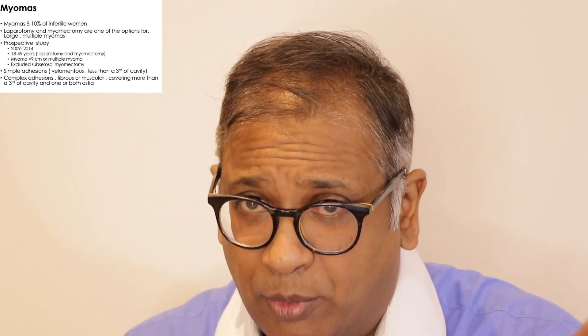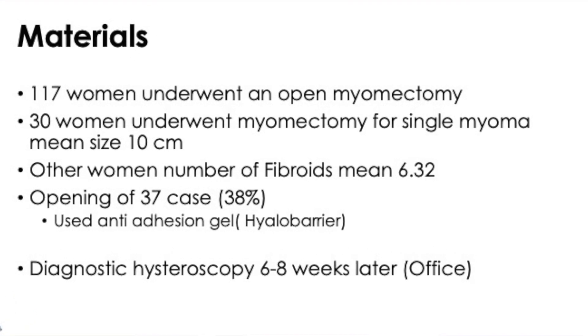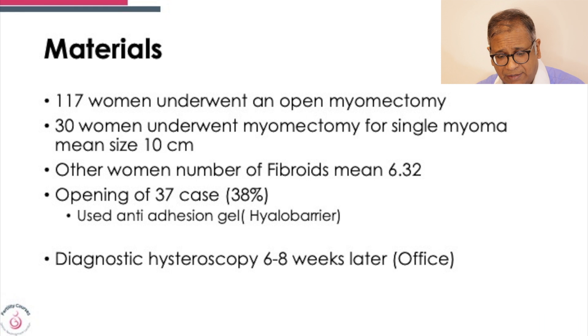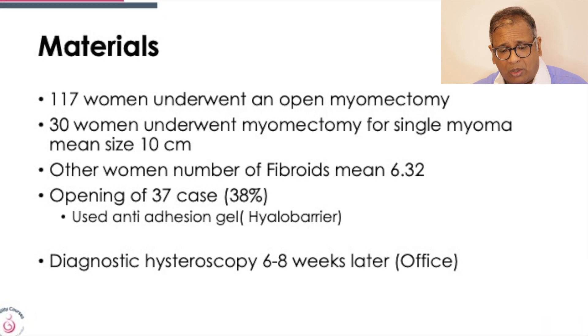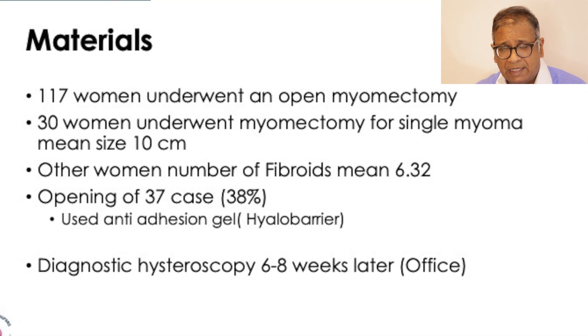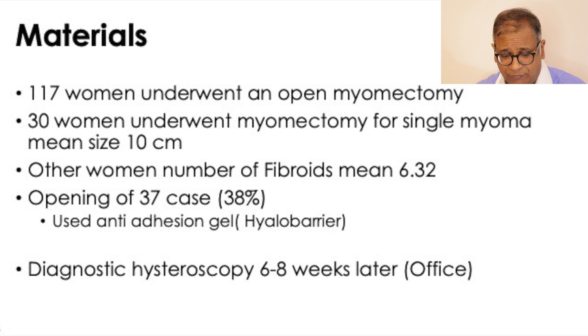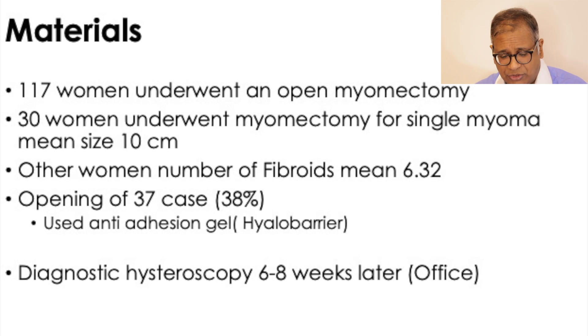They looked at intrauterine impact in the post-operative period in the form of adhesions, classified as simple adhesions — velamentous, less than a third of the cavity — or complex adhesions, fibrous or muscular, covering more than a third of the cavity. 117 women underwent an open myomectomy. 30 women underwent myomectomy for a single fibroid, with a mean size of 10 centimetres. Other women had multiple fibroids, a mean of 6.32 fibroids. The cavity was opened in 38 percent of cases and they used an anti-adhesion gel.